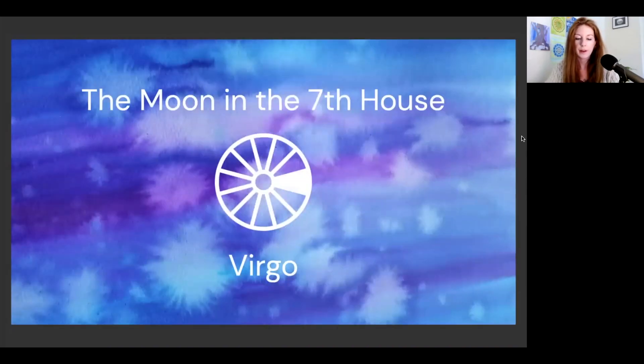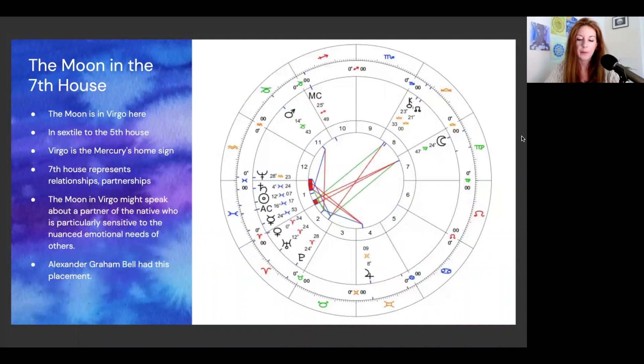Moon in the seventh house, the moon will be in Virgo here. This is going to be in a sextile to the fifth house, and Virgo is the temple of Mercury. Seventh house can represent relationships, primarily partnerships, mostly marriages, but can also represent business relationships of a long-term nature. The moon in Virgo might speak about a partner of the native who's particularly sensitive to the nuanced emotional needs of others. It's a combination of the intellect, Mercury, and our emotions, the moon, and it can also represent a creative who's also very articulate when it comes to expressing their emotional states.